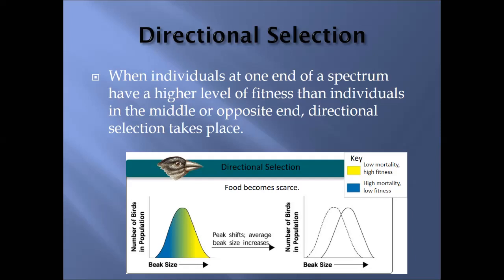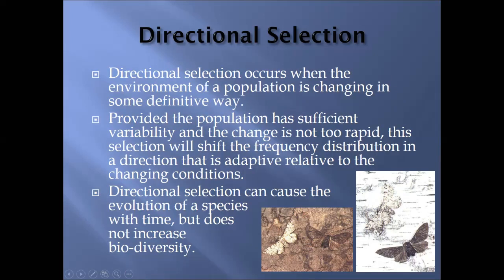This is very similar to the example of the pepper moths activity. Directional selection occurs when the environment is changing in a definitive way and some individuals are more adapted than others, giving them a higher chance of survival. Those with higher survival leave more offspring, so the population ends up with more of those individuals. Directional selection causes one species to evolve into another over time, but it does not increase overall biodiversity — you go from one species to one species, but evolution does occur.